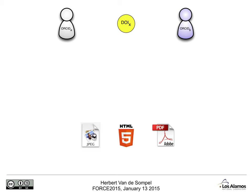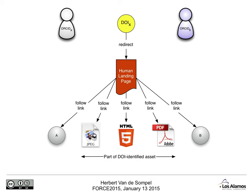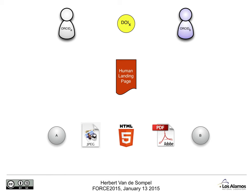I will explain by means of a pattern that is very common in web-based scholarly communication. Here's a DOI-identified asset. It has two authors identified by their ORCID, and the asset consists of three resources: a PDF, an HTML document, and an image. And for good measure, let's add the landing page to the mix. Currently, there are roads that connect these resources — implemented using HTTP and HTML links. The DOI redirects to the landing page, which has links to the PDF, the HTML, and the image. But the landing page also has links to other stuff on the web that is not part of the asset. And there are also roads from the profile pages of these authors to the DOI. The overall point is that while roads exist, there are no signposts on the roads to indicate where they lead. A human can navigate those roads intuitively, but a machine does not have that capability.